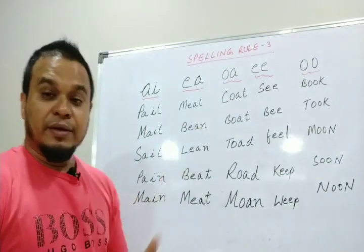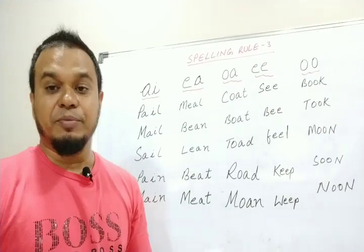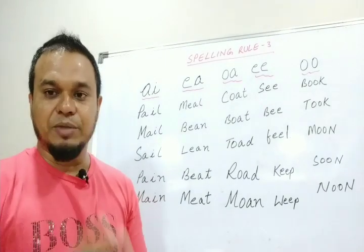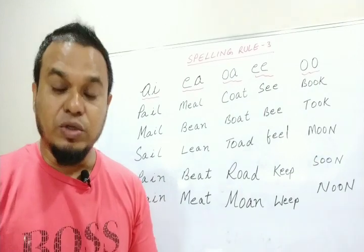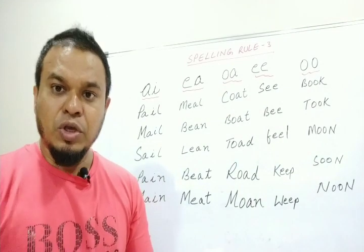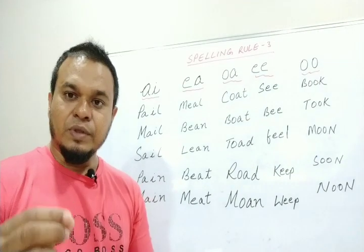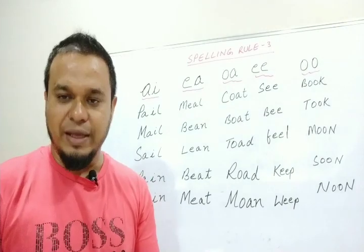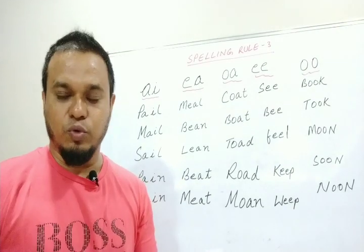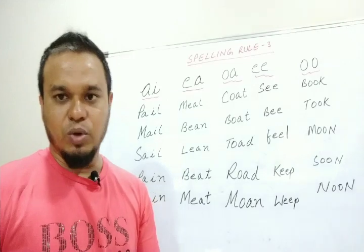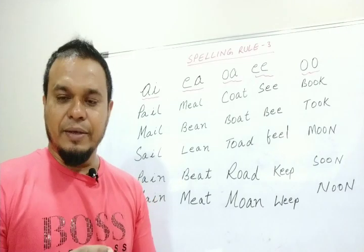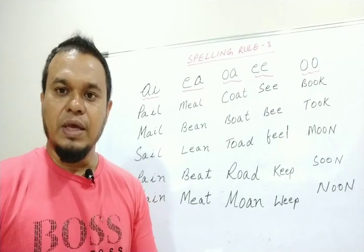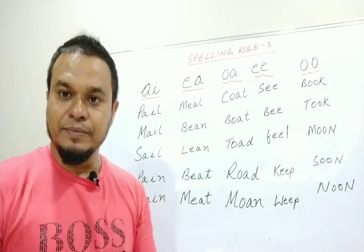Now the second rule: when E and A come together, the sound will be E — the long E sound. In some words it is exceptional, but mostly — 90% of the time — when E and A are together, the sound will be the long E sound.